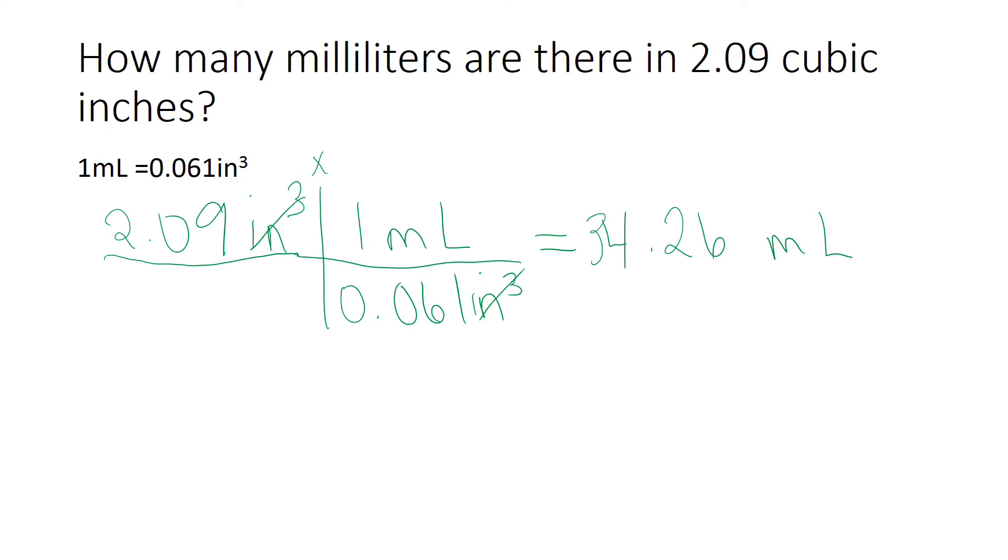Now I need to go back and double-check my sig figs and make sure that those are correct. So I notice that the number I'm given in my problem has 3 significant figures, so therefore my answer has to have 3 significant figures. So I'm going to count from the left, 1, 2, 3, and draw a line. And then I look to my 6, and it says that I need to round up. So my answer is 34.3 milliliters.